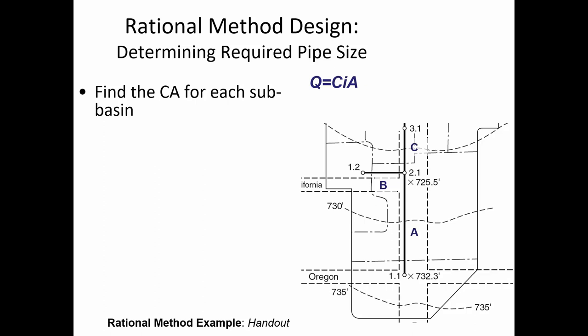Is the C value high for impervious area or low? It's high — good. A high C value is associated with impervious surfaces. Looking at the rational method equation Q = CIA: from a parking lot you're going to have lots of peak runoff, so Q will be large for an impervious surface. To get a big Q, the C value needs to be high. So C is the percentage of water that runs off out of the total falling onto the surface.